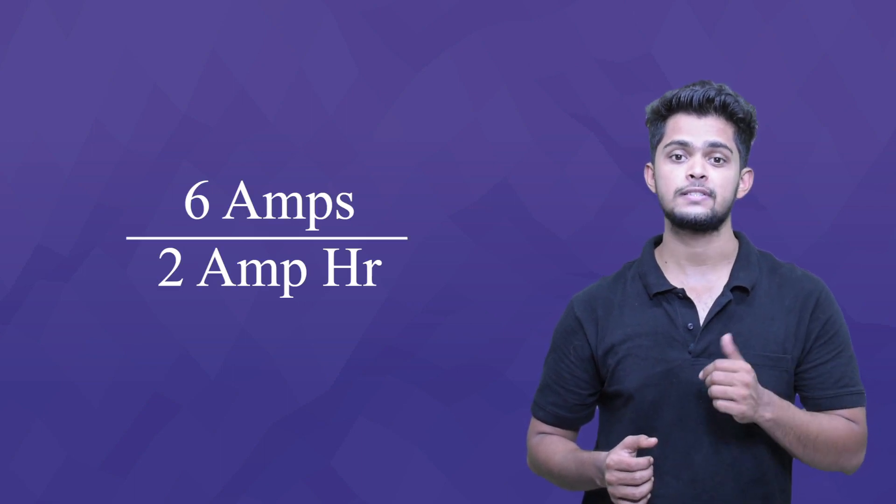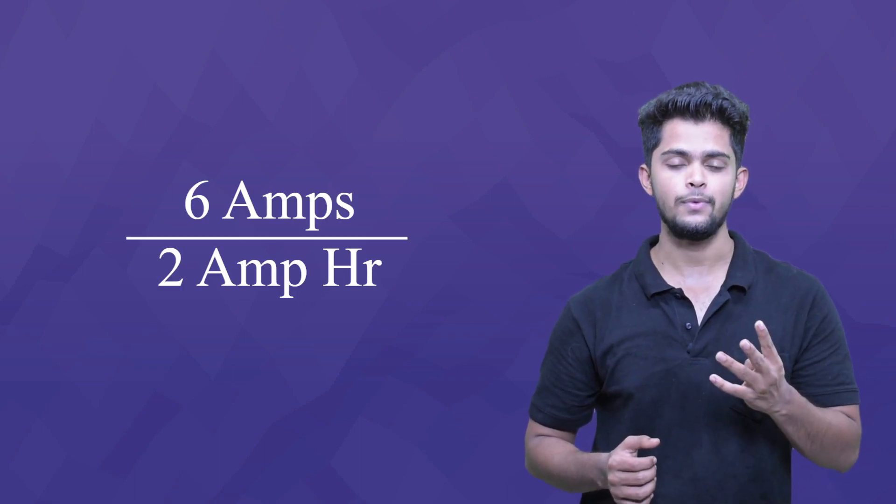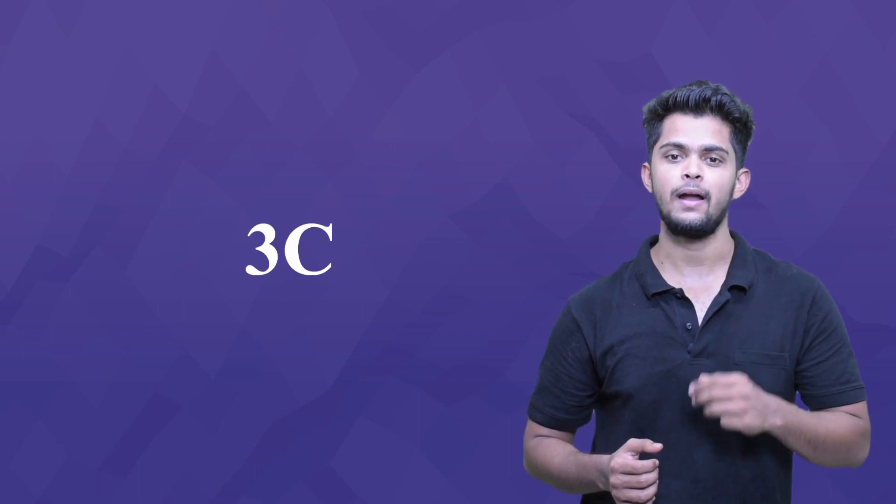If the same cell has a maximum discharge rating of 6 Amps instead of 4 Amps, it would be a 3C battery. If the maximum discharge rating is 10 Amps, it would give us a 5C battery. But if it had a capacity of 5 Amp-hours instead of 2 Amp-hours, then it would be back to a 2C battery.